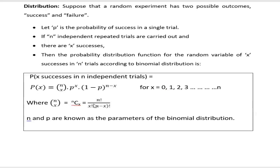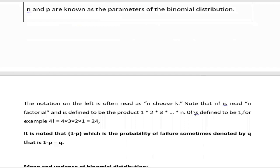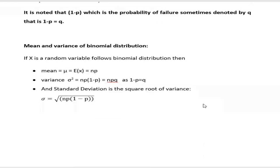The value of nCx can be calculated easily from a calculator or computer. Note that (1−p) is often denoted by q, which represents the probability of failure. For binomial distribution, remember: the mean is E(x) = n × p; the variance is n × p × (1−p), that is npq where q = 1−p; and the standard deviation is the square root of the variance, that is √(np(1−p)).